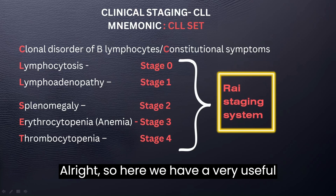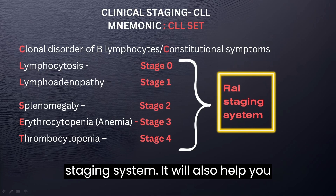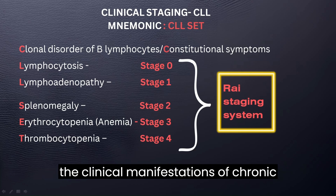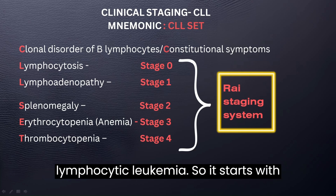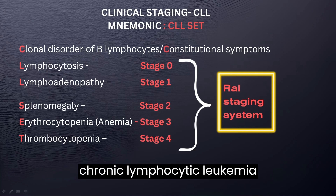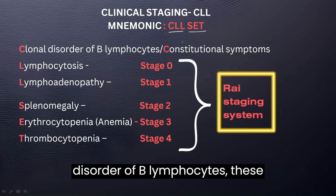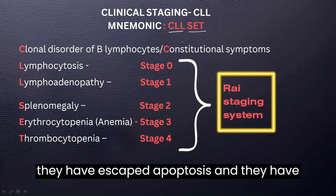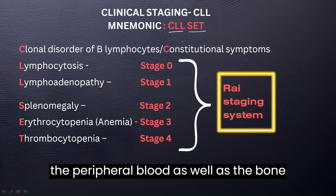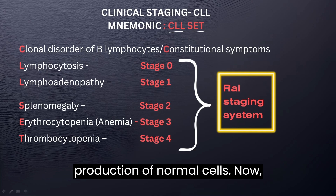Here we have a very useful medical mnemonic — very instrumental — because it will help you memorize the right staging system and organize your thoughts when it comes to the clinical manifestations of chronic lymphocytic leukemia. It starts with CLL. So C: think of clonal disorder of B lymphocytes. These lymphocytes are small and matured, they have escaped apoptosis, and they have infiltrated the lymphoid tissues, the peripheral blood, as well as the bone marrow, overcrowding it and preventing the production of normal cells.